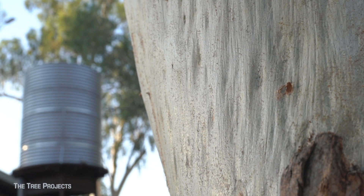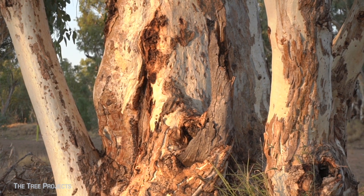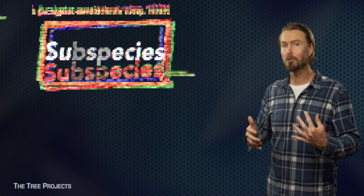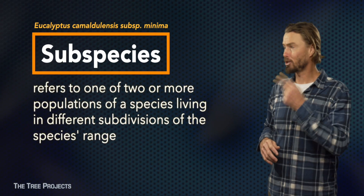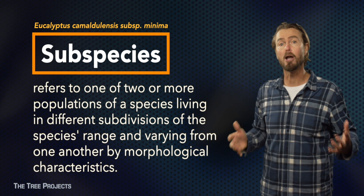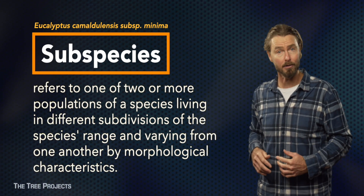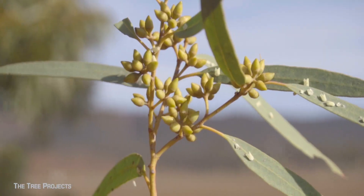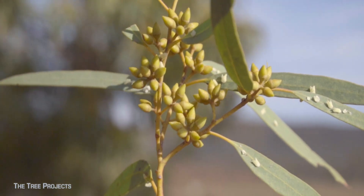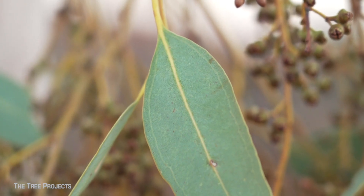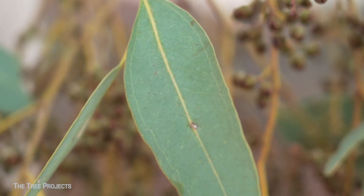With such an expansive range and covering such vastly different environments, there is no surprise that there are seven subspecies of this absolutely legendary tree. In biological classification, the term subspecies refers to one of two or more populations of a species living in different areas. They differ from one another by having slightly different morphological characteristics, like maybe different shaped leaves.